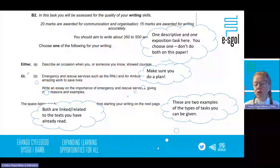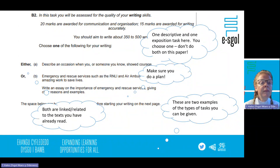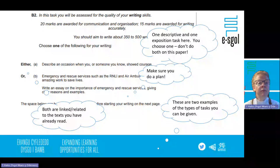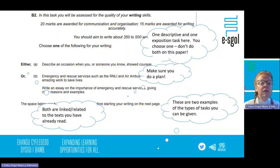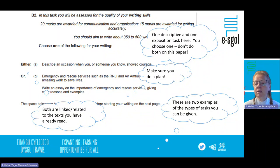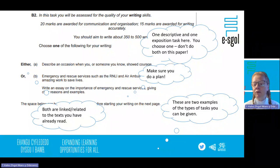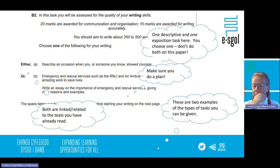You get two questions and choose which one to do. For example: 'Describe an occasion when you or someone you know showed courage' — that's description. Or 'Emergency and rescue services such as the RNLI do amazing work to save lives — write an essay on the importance of emergency rescue services' — that's the exposition task. In this particular paper there's no narration task. The questions are linked to the text you've read — they do this so you get ideas and can use the content from your reading to help with the writing. There's nothing wrong with using the text to give you ideas.